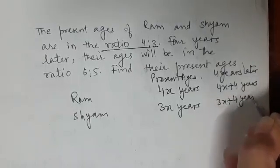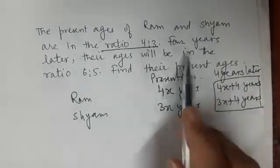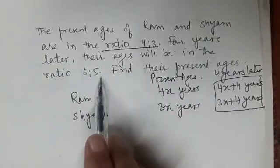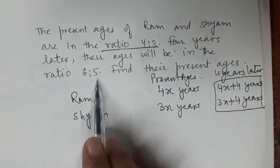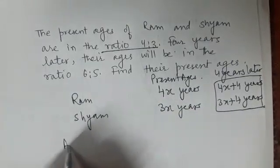Now our relationship is given between these two. Four years later their ages will be in the ratio 6 is to 5, so we can write here that according to the question...